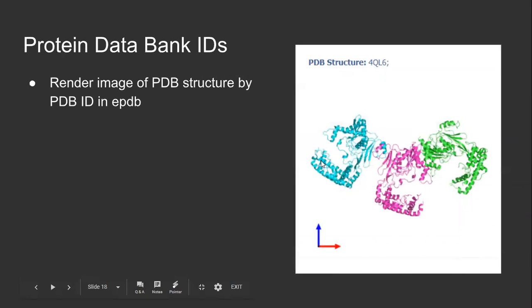Furthermore, Clambase provides an annotation field for protein database IDs. Researchers can add the four-digit code to the protein, the information is written to Wikidata, and the next time the researcher visits the page, the structure will be shown.